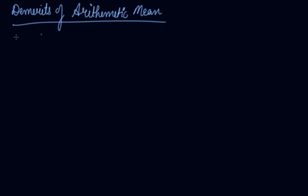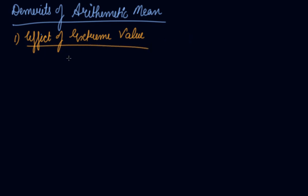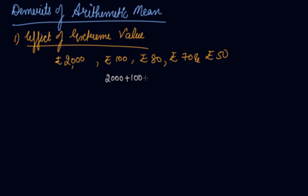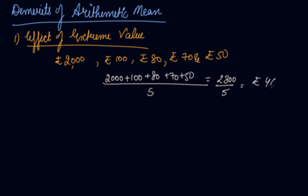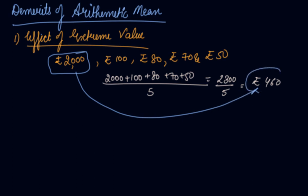Now the demerits of arithmetic mean. The first is the effect of extreme value. If we calculate the pocket money of class 9 children — there is a child from a very rich family who gets Rs.2000 as pocket money per month, while other children get Rs.100, Rs.80, Rs.70, and Rs.50. When calculating the arithmetic mean, we add all values and divide by 5, getting Rs.2300 divided by 5 equals Rs.460. This is a misleading result because it is affected by the extreme value of Rs.2000.